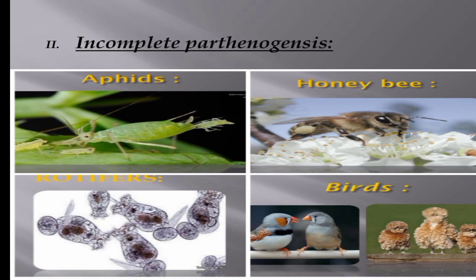The second type of natural parthenogenesis is incomplete parthenogenesis. The life cycle of certain insects includes two generations: a sexual generation and a parthenogenetic generation, which alternate with each other. In such cases, the fertilized eggs produce females and the unfertilized eggs produce males. This is known as partial, incomplete, or cyclic parthenogenesis.